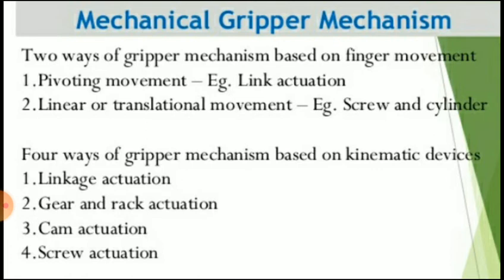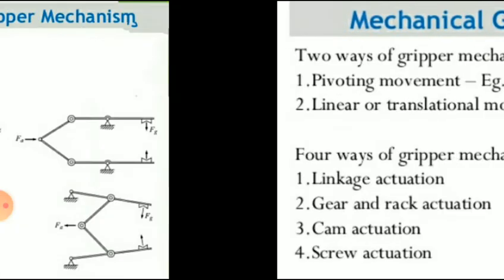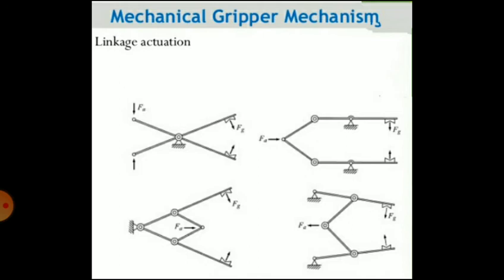The mechanical gripper mechanism can be based on two types of finger movement: pivoting movement (e.g., link actuation) and linear or translational movement (e.g., screw and cylinder). There are four kinematic devices: linkage actuation, gear and rack actuation, cam actuation, and screw actuation. Linkage actuation uses different linkages to apply force on a surface to grip it.